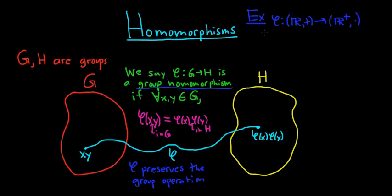And our function here, phi, is defined as phi of x equals e to the x. Probably one of the most important, if not the most important, function in all of mathematics. So this is the group homomorphism. Let's show it.